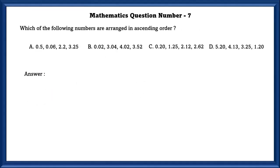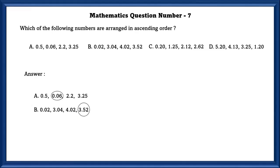Mathematics question number 7. Which of the following numbers are arranged in ascending order? In option A, 0.06 is smaller than 0.5, so this option is wrong because they have asked ascending order. In option B, 3.582 is smaller than 4.02, so this is also wrong. In option C, numbers are arranged in correct ascending order. This option is correct.